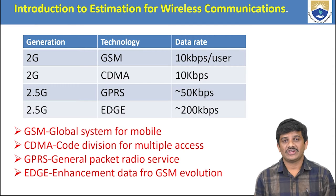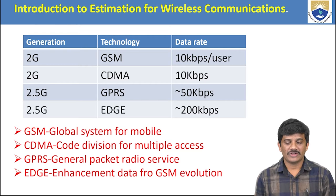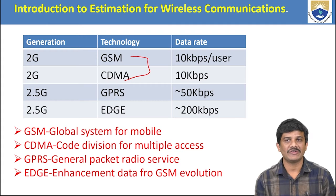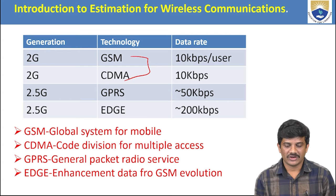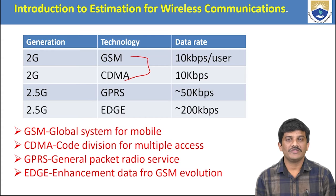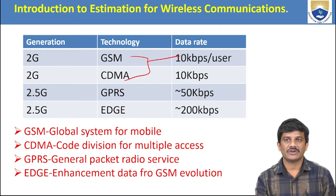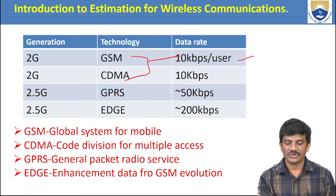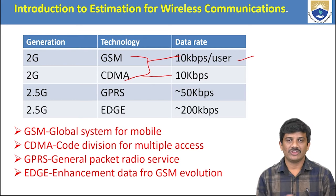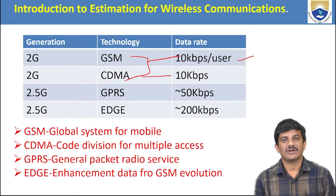Looking at which technology and data rate each generation uses: In the second generation, we use two technologies — GSM (Global System for Mobile) and CDMA (Code Division Multiple Access). With GSM, the data transfer rate is approximately 10 kbps per user, and CDMA also offers 10 kbps. Those are the two technologies used in the second generation.